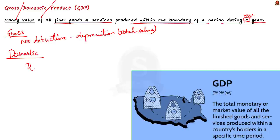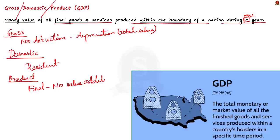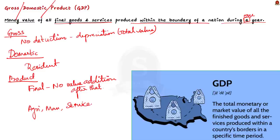'Product' refers to final goods and services — 'final' means the stage after which there is no known chance of value addition. Only final goods are added; intermediate goods are not included in GDP calculation. Income generated by foreigners in a country is included in GDP, but income generated by nationals outside the country is not included. GDP is derived from agriculture, manufacturing, mining, construction, and the service sector, and is the single most important indicator to capture economic activity.